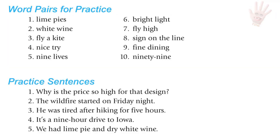Word pairs for I diphthong: lime pies, white wine, fly a kite, nice try, nine lives, bright light, fly high, sign on the line, fine dining, ninety-nine.